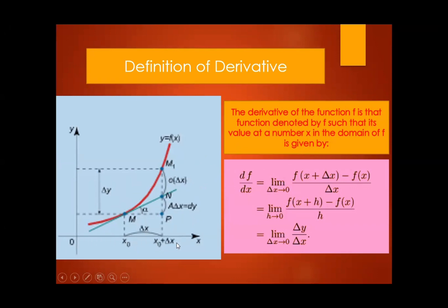We have the change of X and then the change of Y. Since this is a slope, we have change of Y over change of X. The derivative of F with respect to DX is the limit of F. X sub 2 is X plus change of X, minus F of X, over change of X, as change of X approaches 0.